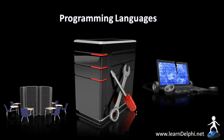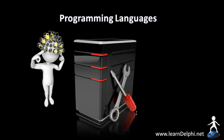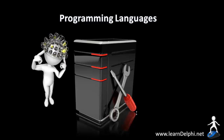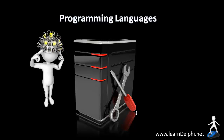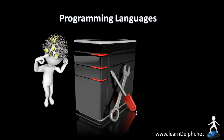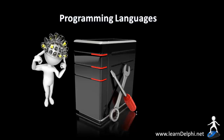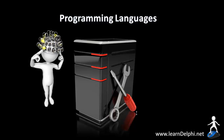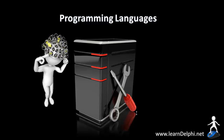In order for a computer to act smart, a programmer must first write instructions. Those instructions are specific lines of code, and the code is in a specific language called a programming language.